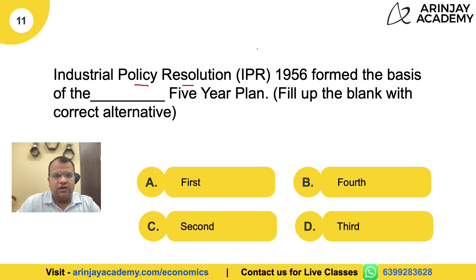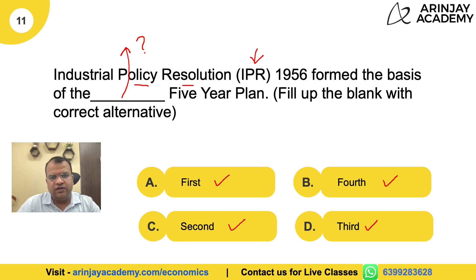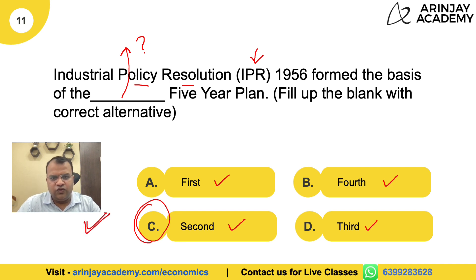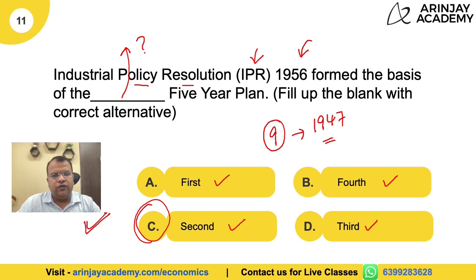Industrial Policy Resolution, also known as IPR 1956, formed the basis of which 5-year plan? Was it the 1st, 4th, 2nd, or 3rd 5-year plan? The correct answer is C, which is the 2nd 5-year plan. We are talking about 1956, which is only 9 years away from when India got independent, so ideally it cannot be the 3rd or 4th plan. It was not the first one either. So the correct answer is the 2nd.